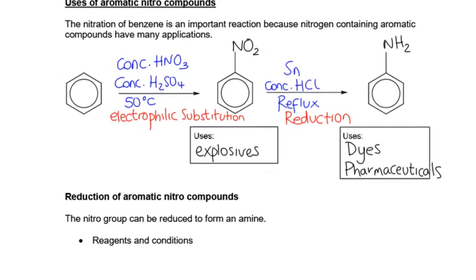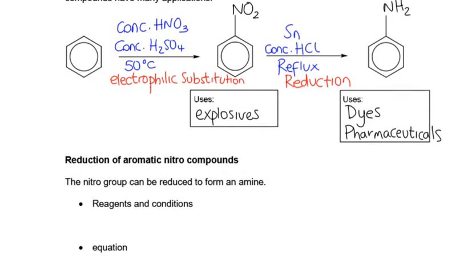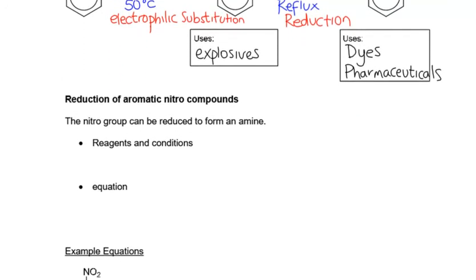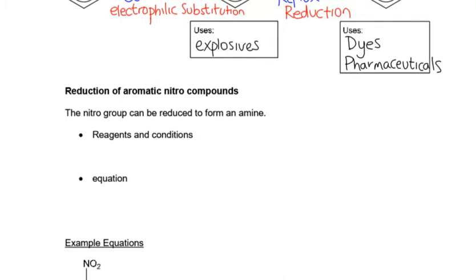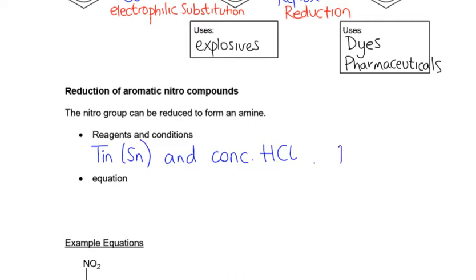So how do you do that second step? That first step — go back and look at the nitration if you've forgotten. For the second step, remember we use tin, which is given the symbol Sn in the periodic table, and concentrated HCl. That's a reacting mixture — both are reagents; neither is the catalyst. And we're going to reflux it, so the condition is reflux. The reagents are tin and concentrated HCl, and the condition is reflux.